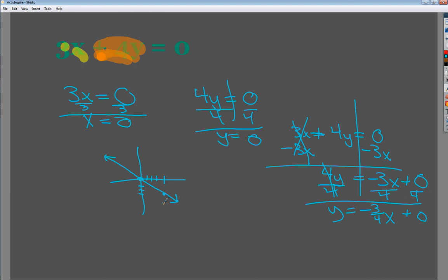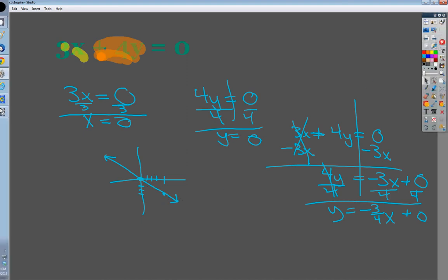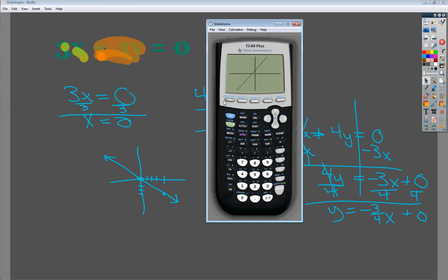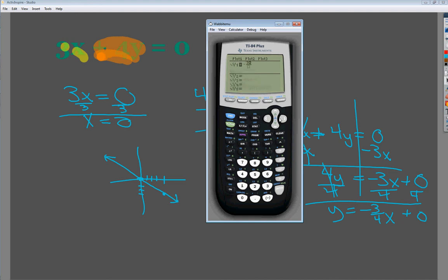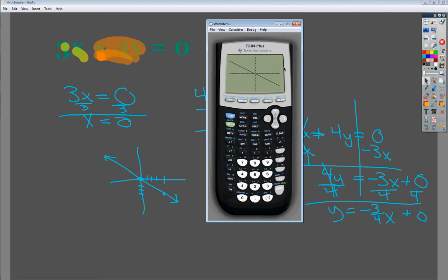In the calculator, it looks like this. Y is equal to negative 3 over 4x. And I'm not even going to put the plus 0. It already knows. So you see, you get that graph. So that's standard form. Intercepts method is great as long as you're graphing it by hand and it's not equal to 0. So I would use that a lot. Otherwise, choose your own adventure, I guess.